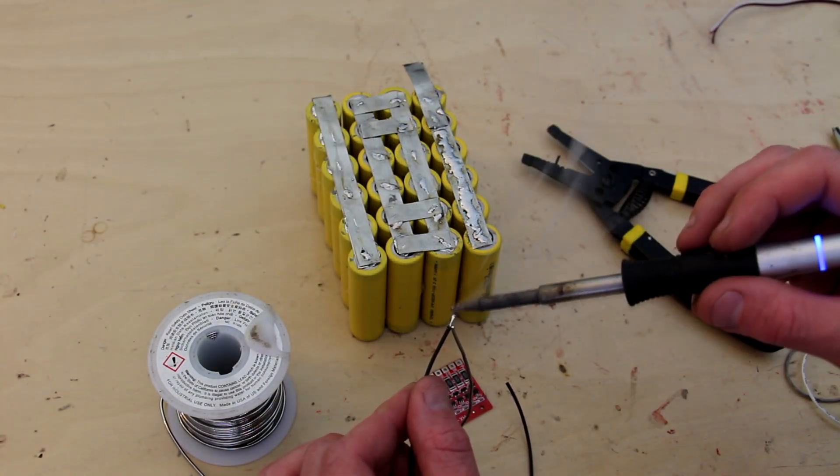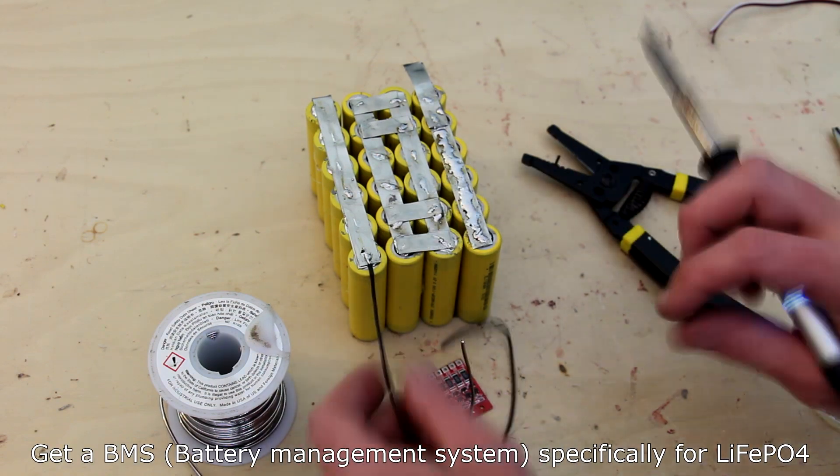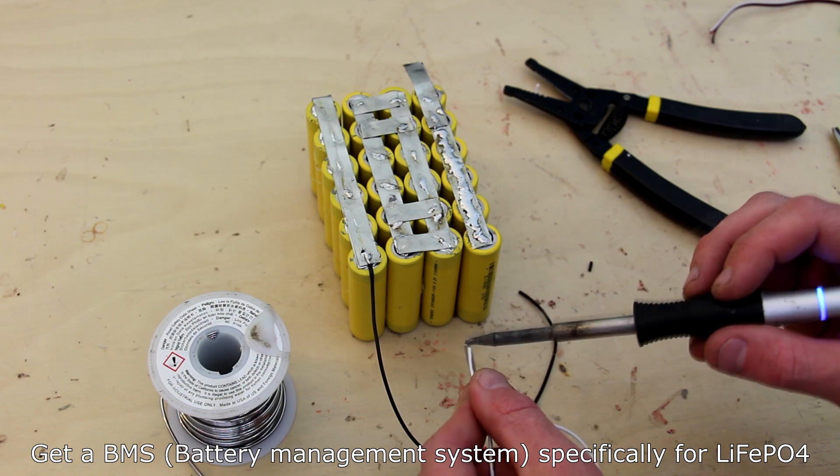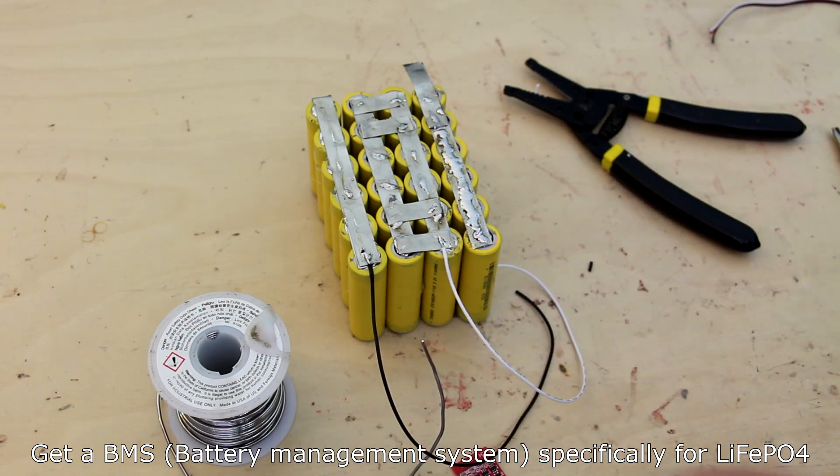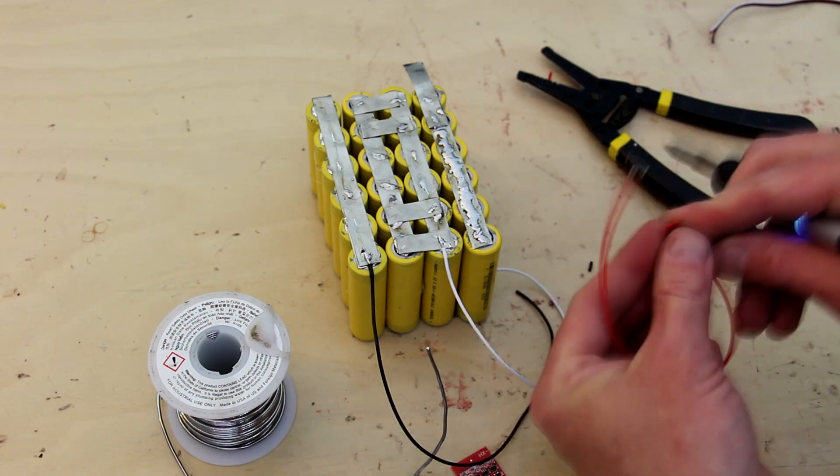While not explicitly required, it's always a good idea to use a BMS or a battery management system. In the drone world we call this a battery balancer. The job of the battery balancer is to discharge overcharged cells so that the entire battery retains a constant voltage.